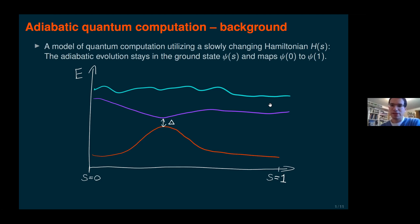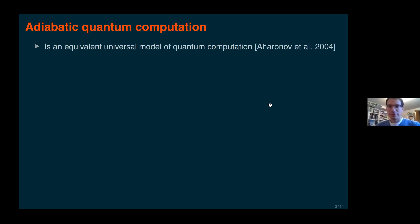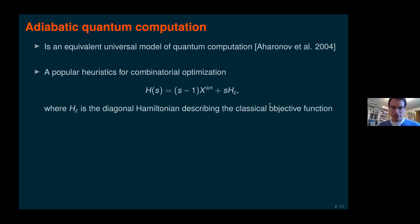The key parameter in analyzing this adiabatic evolution is the spectral gap — the gap between the ground state energy and the next energy level. If you do this evolution slowly, which is polynomially slow in terms of the spectral gap, then this mapping is really accurate and you will find the ultimate ground state. Adiabatic quantum computation is equivalent to and universal as a model of quantum computation, so everything can be cast into it.